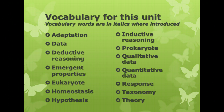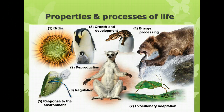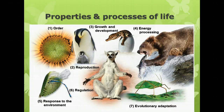We're starting off talking about living things, and one of the things that we have to talk about is how we know whether something is living. There are certain characteristics that all living things have in common. Depending on the book that you look at, you will see anywhere from six to eight or ten properties and processes or characteristics of living things. Your book lists seven, and we're going to talk about these seven properties and processes or characteristics of living things.